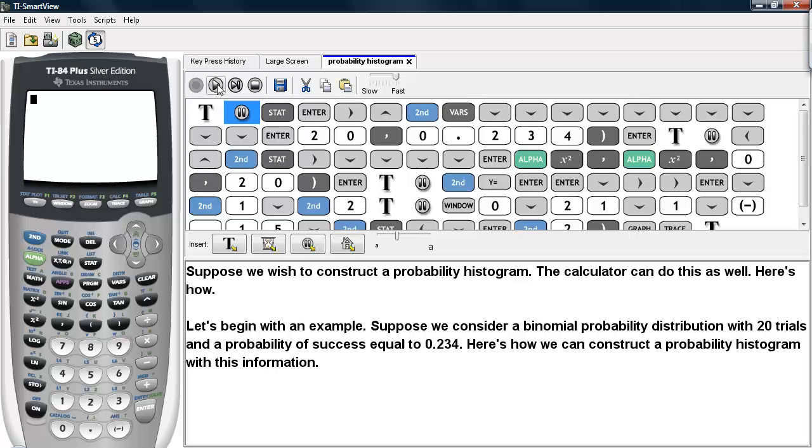Here's how we can construct a probability histogram with this information. We go under STAT and EDIT, and we go ahead over to list 2.